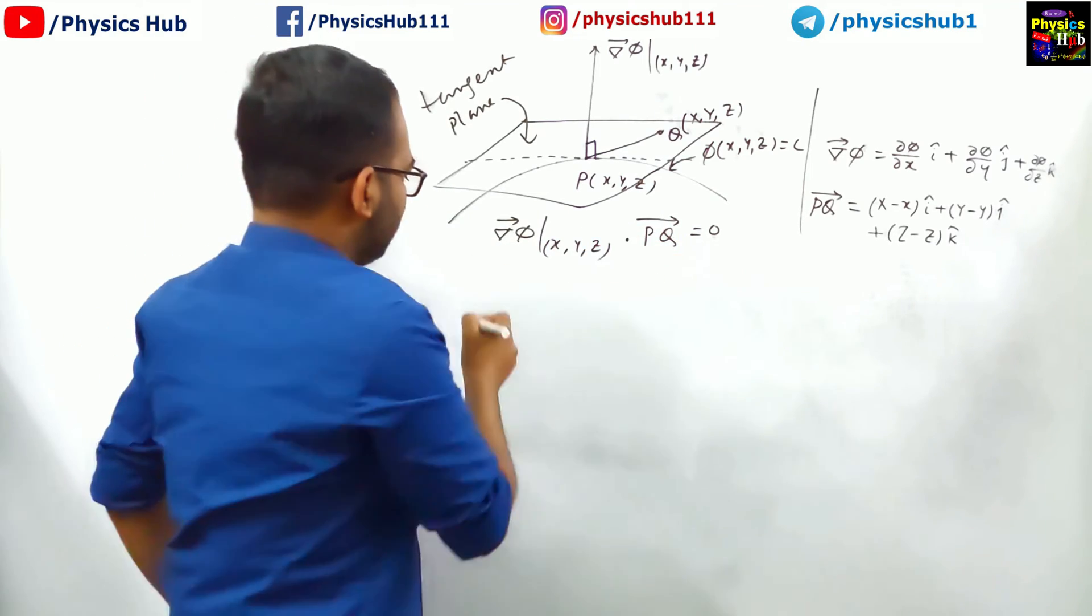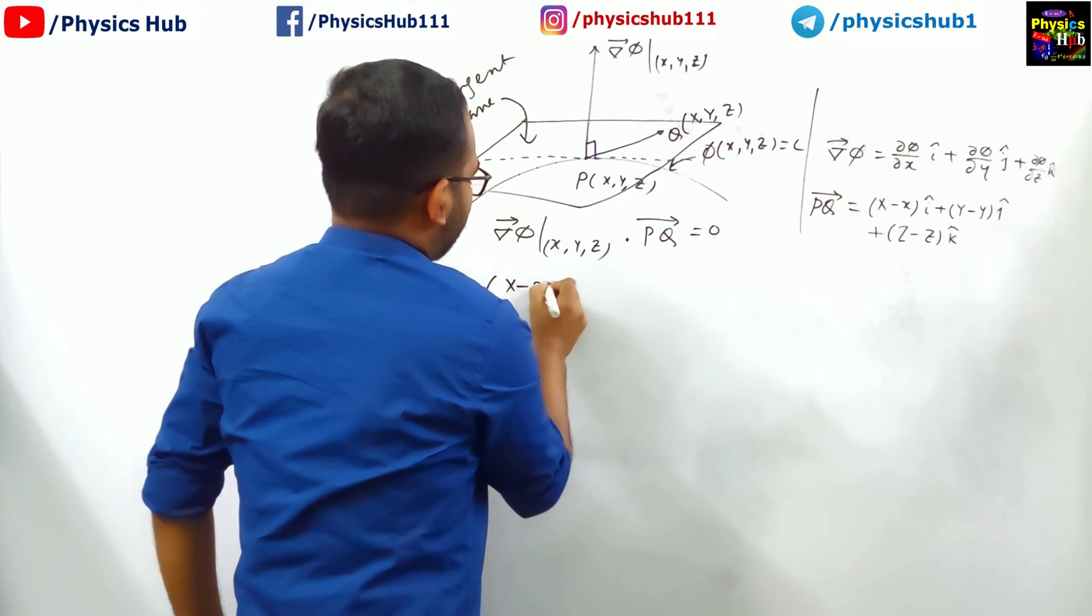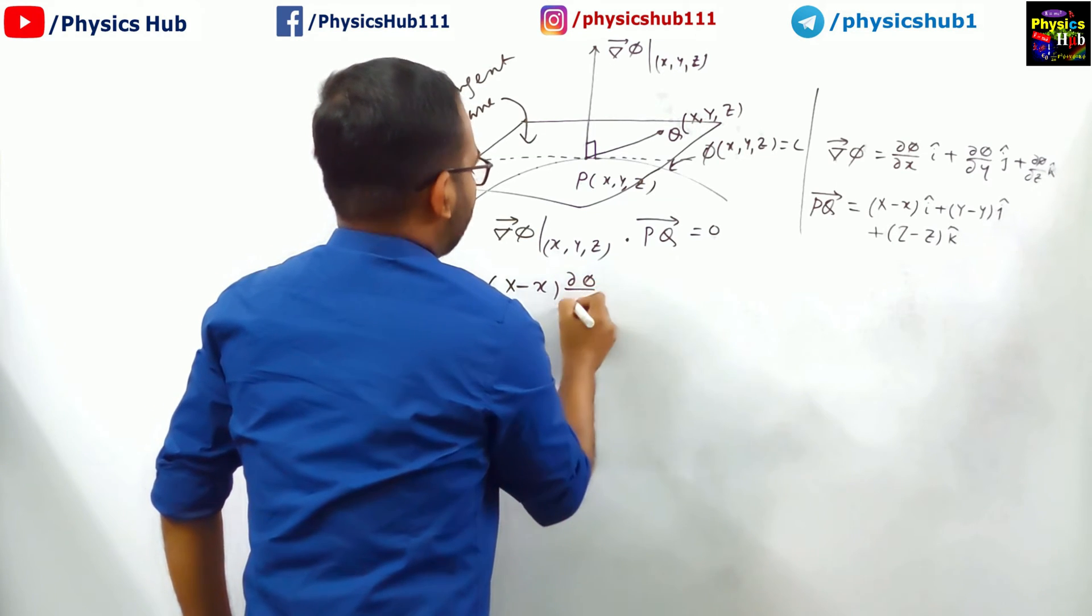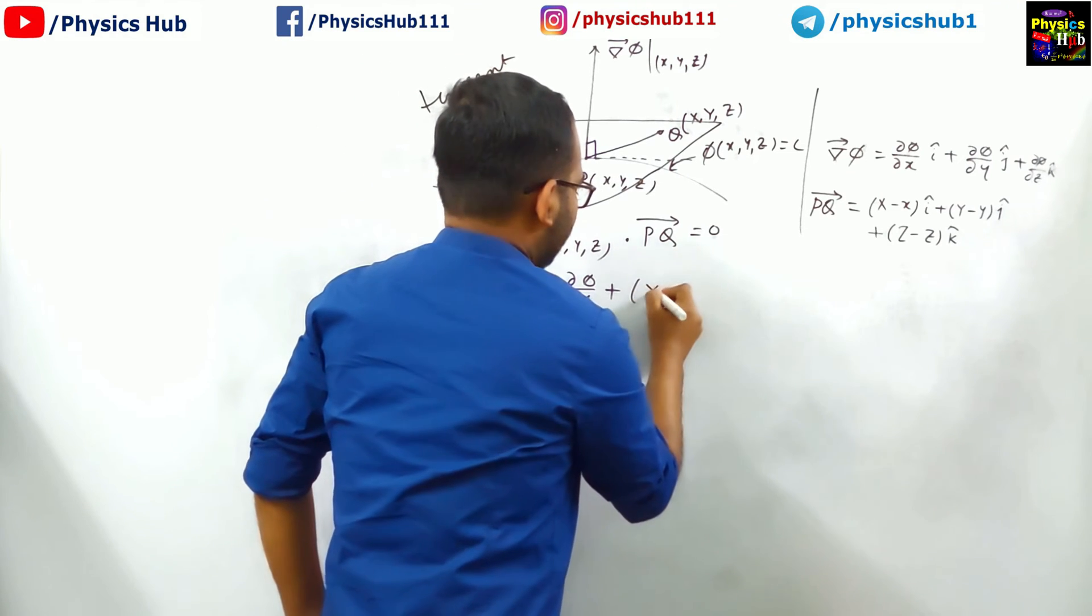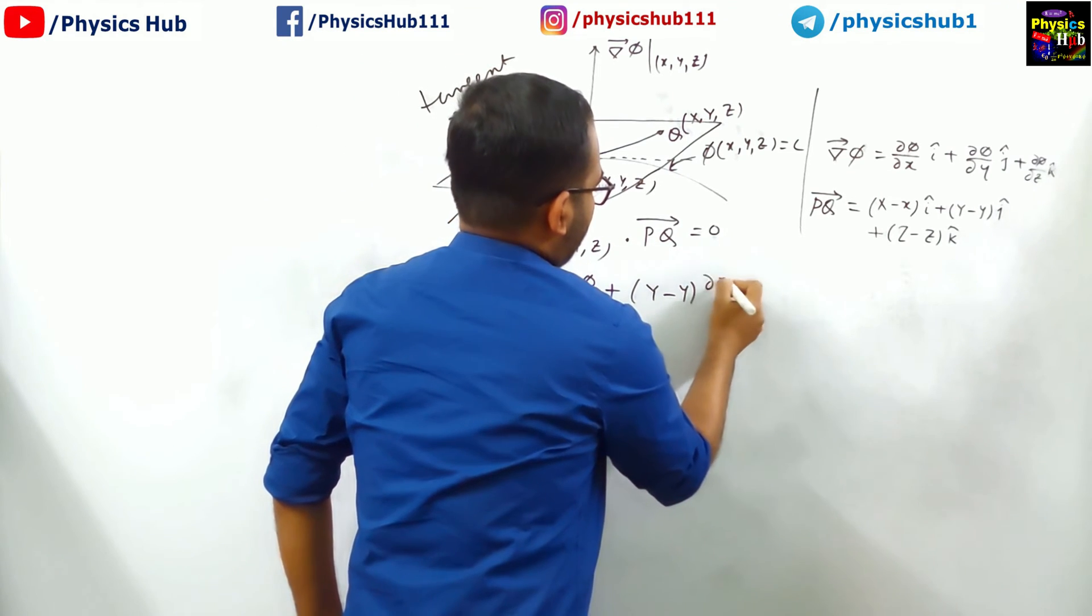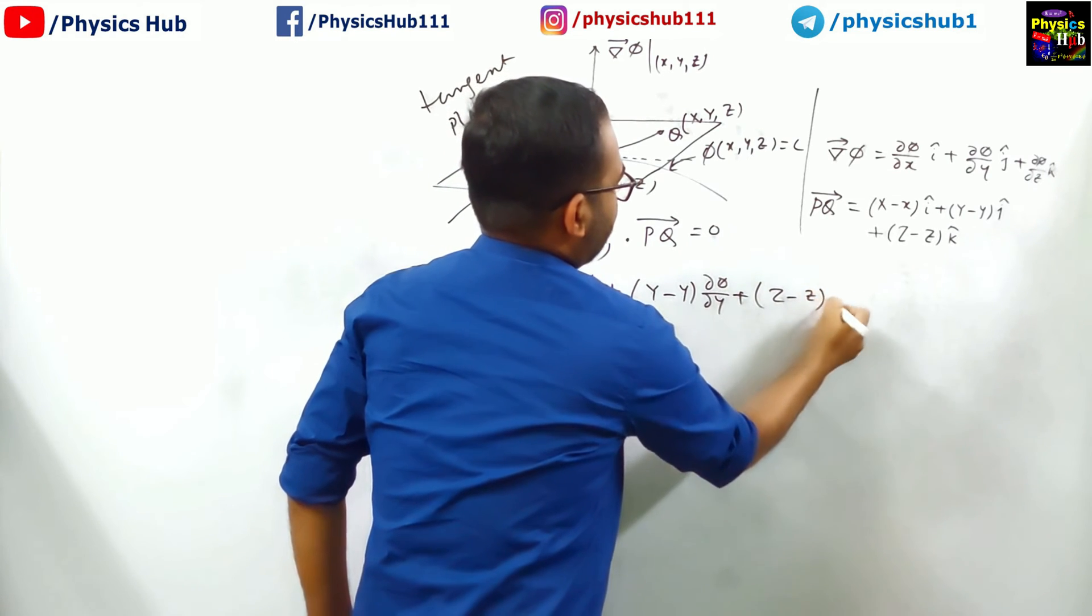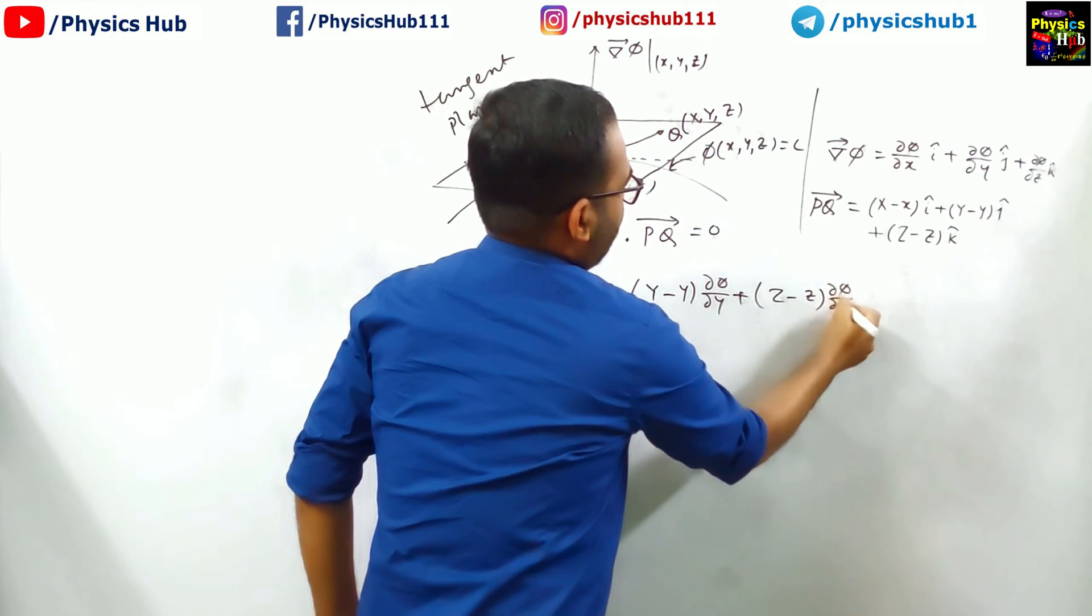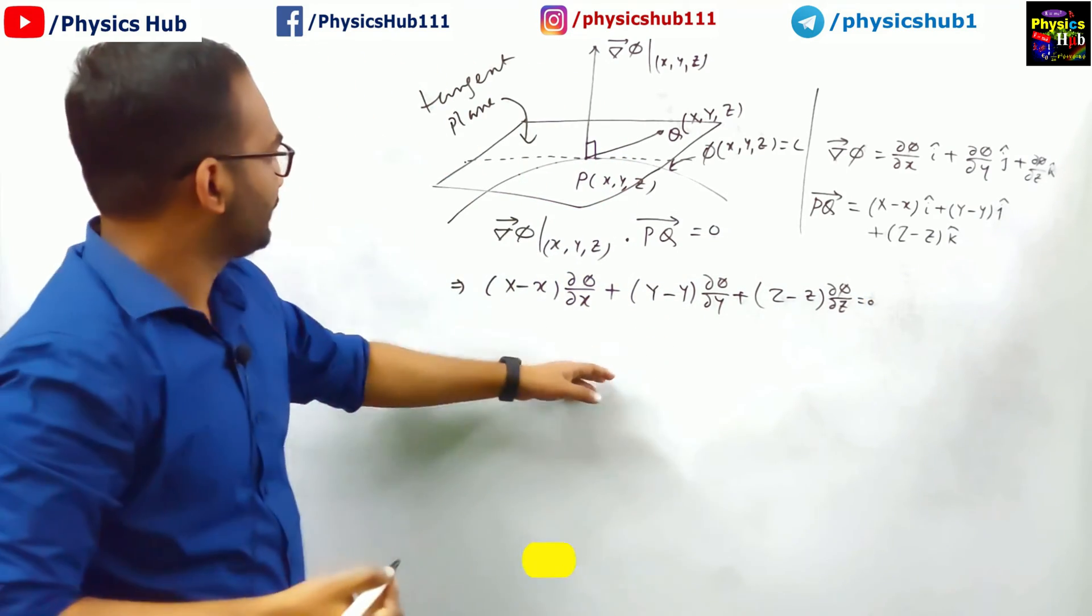Now, the dot product is 0. We can utilize that: capital X minus small x times del phi upon del x plus capital Y minus small y times del phi upon del y plus capital Z minus small z times del phi upon del z equals 0. This is the desired equation of this plane.